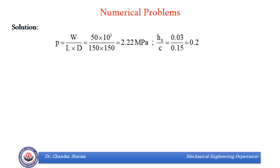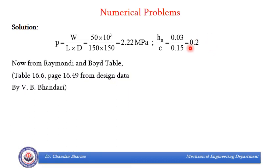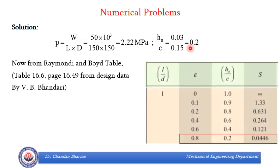So first of all, we found what is pressure. It came out to be 2.22 mega pascal, which you can see over here. And then H0 by C is being given as 0.2. Now next what we will do, as discussed right now, we will take help of Raimondi and Boyd table, that is page number 16.49, table 16.6 from the data book by V Bandari. This is a snapshot of that table. We can see that for H0 by C of 0.2, we have S, corresponding S is 0.0446 for L by D 1.